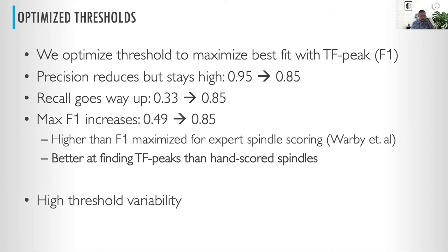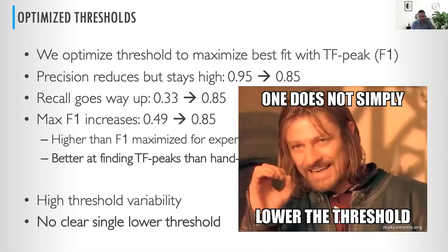Can we just find a new spindle threshold and be done? Between subjects, there's very high variability between the optimal thresholds. Essentially, there's no really clear single lower threshold — at a certain point when you lower the threshold too much, you start picking up garbage, and that messes everything up. So we need to do a little bit better than that.